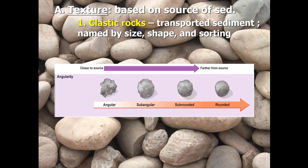As those particles become transported by rivers, by water, and by wind, over time many of these angular particles become more rounded — from sub-angular, then sub-rounded, and then finally rounded. That's due to bouncing of particles along the bottom of river valleys or bouncing along the bottom as they're transported by wind. Over time, particles tend to become more rounded as they travel further away from the source area.